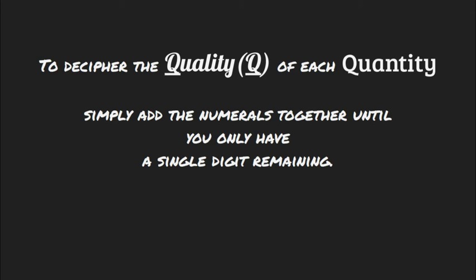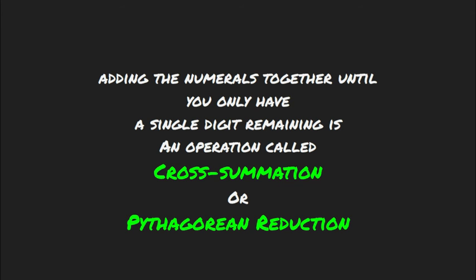To decipher the quality of each quantity, simply add the numerals together until you have only one digit remaining. Adding the numerals together until you have a single digit remaining is an operation called cross summation or Pythagorean reduction. I find using the name cross summation to better explain what is being done.